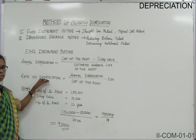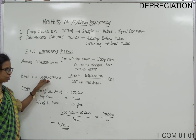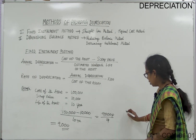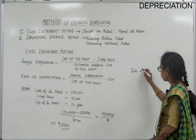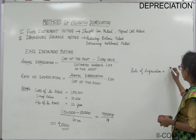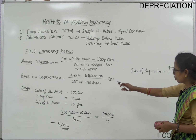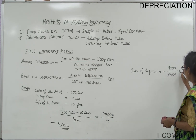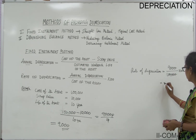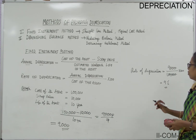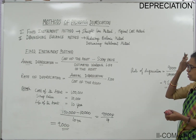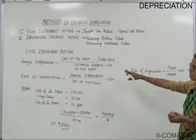If you are asked to calculate the rate of depreciation, apply this formula: rate of depreciation equals annual depreciation divided by cost of the asset, multiplied by 100. So here, rate of depreciation equals 9,000 divided by 1,00,000 into 100, which comes to 9%. The rate of depreciation is 9%.